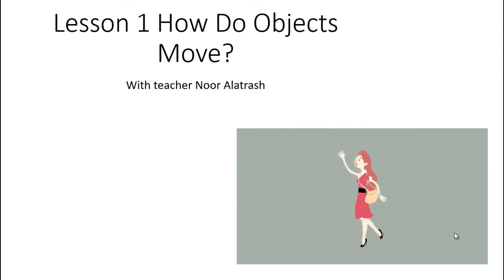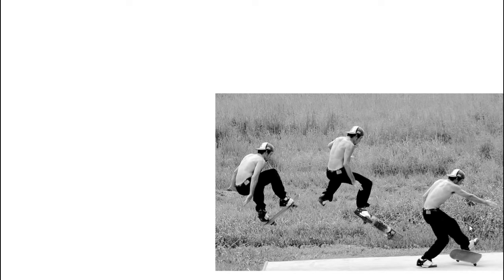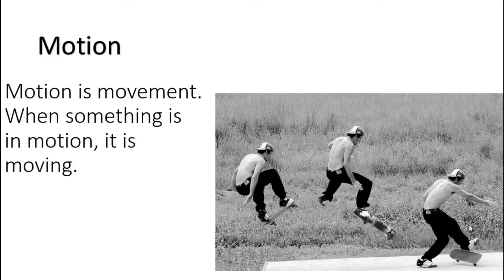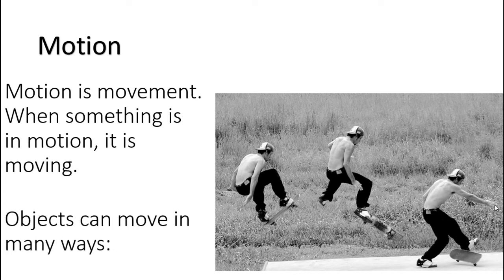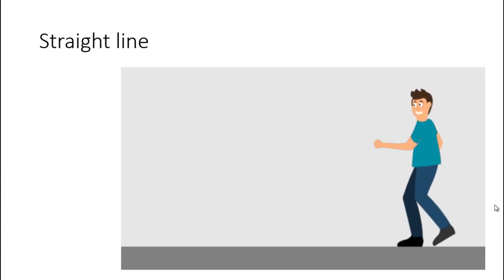Our two vocabulary words are motion and speed. Look at this picture — this boy is skating, moving from up to down, jumping, sliding, and skating. When an object is in movement we call it motion. Motion is movement — when something is in motion, it is moving.